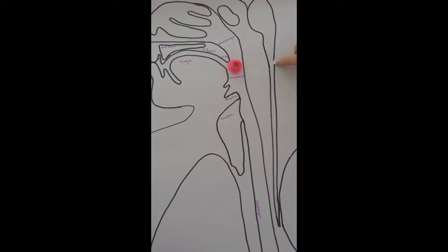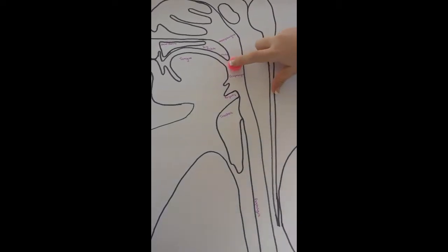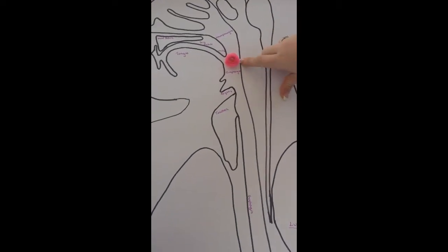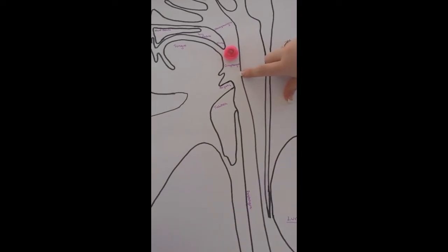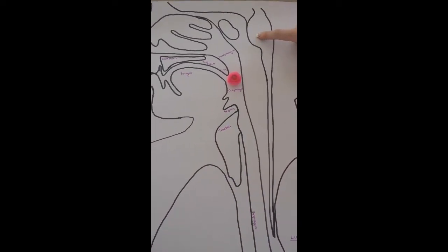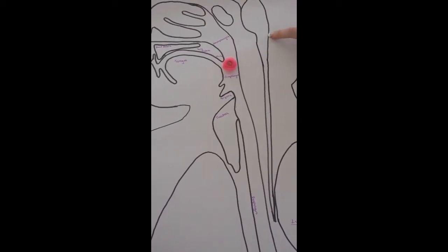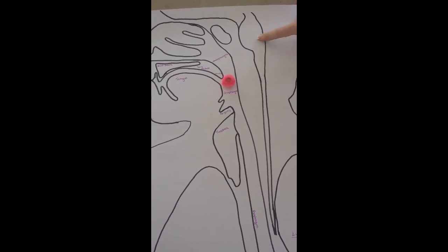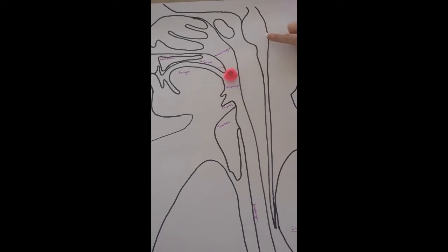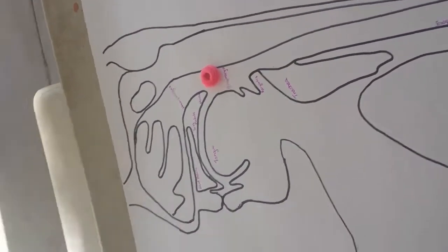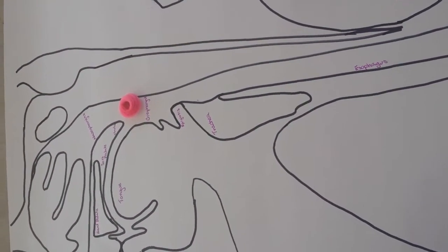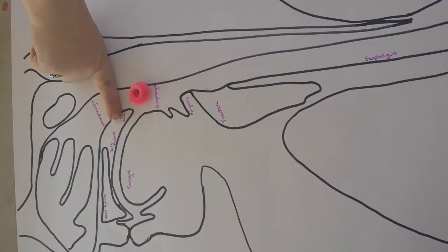The bolus stimulates tactile receptors located in the oral pharynx, which then stimulate the medulla oblongata. The pharyngeal phase of deglutition is controlled by the swallowing center in the medulla, which is located in this area. The medulla oblongata stimulates the soft palate and the uvula to close the nasopharynx.